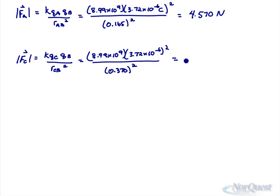Let's work out what that force is. 3.72 to the exponent negative 6 squared divided by 0.370 squared. And you get 0.909 newtons.